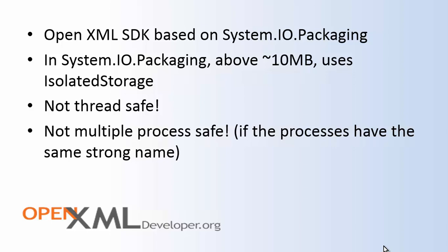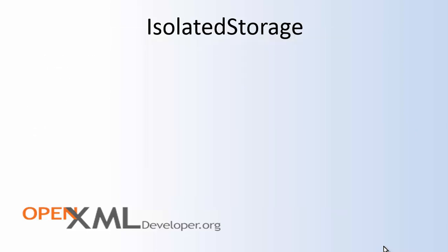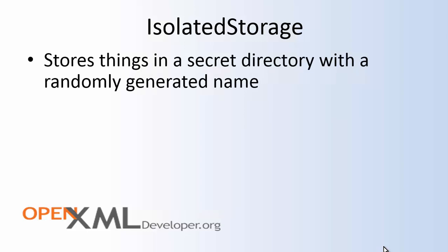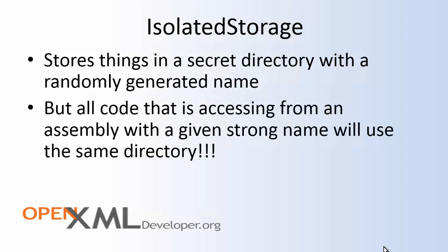Herein lies the problem: isolated storage is not thread-safe. Even more, it's not safe when you are running multiple processes if those processes have the same strong name. Isolated storage stores things in a secret directory with a randomly generated name — probably a name with a GUID as part of it. The key point is that all code accessing isolated storage from an assembly with a given strong name will use the same directory. If you have two threads or two processes accessing that isolated storage directory simultaneously, you get a crash — an object-disposed exception, or if you code in a slightly different way, a null reference exception.